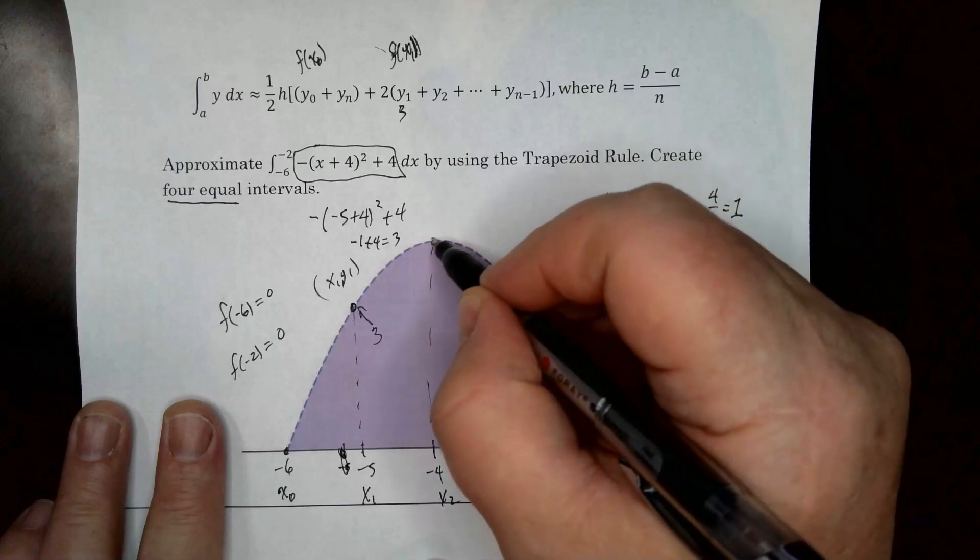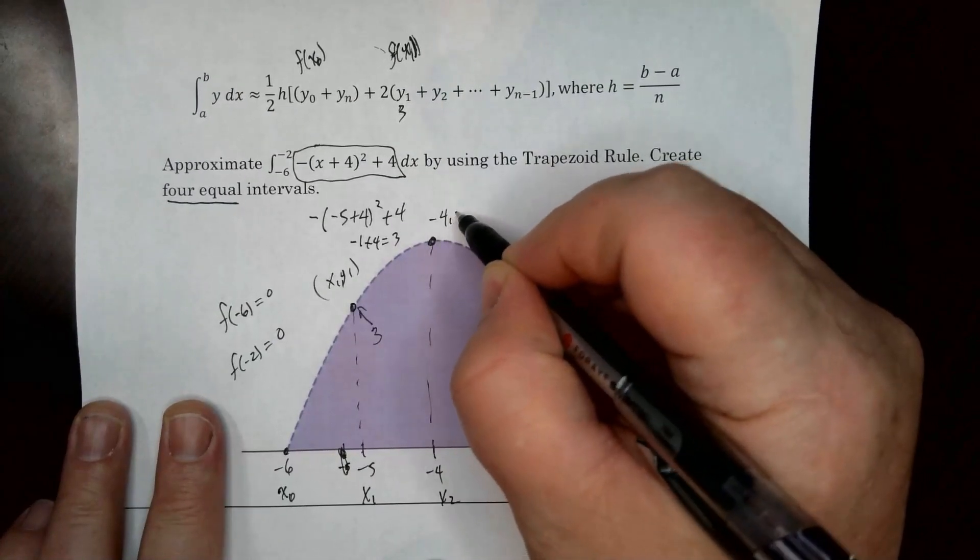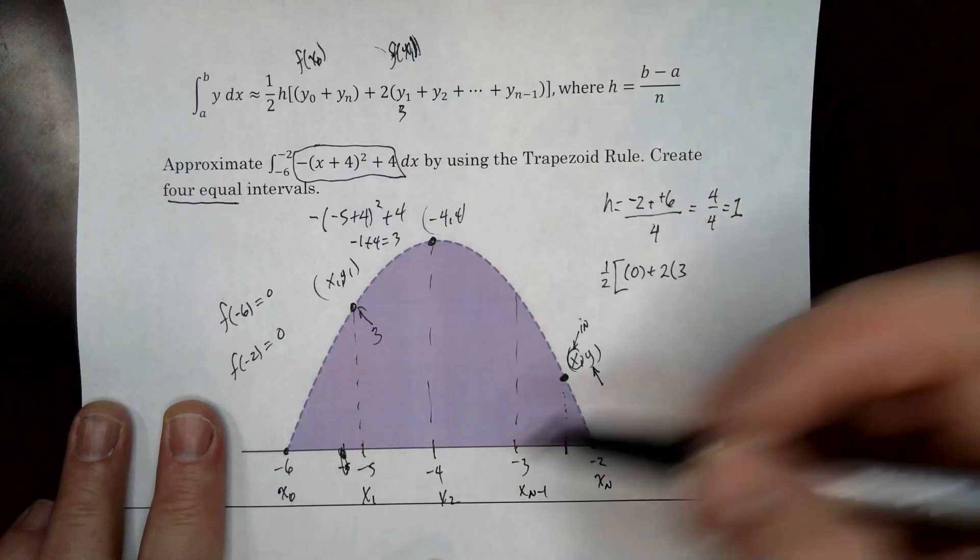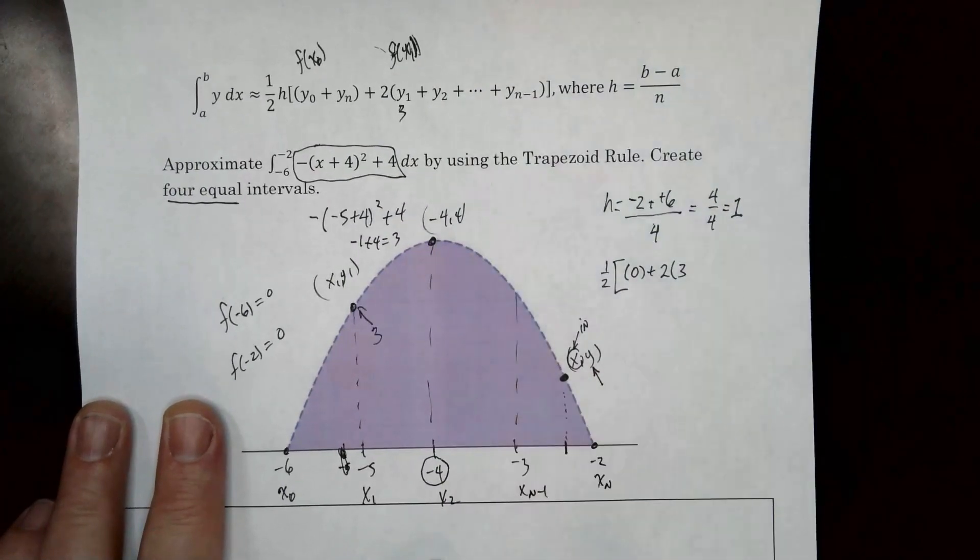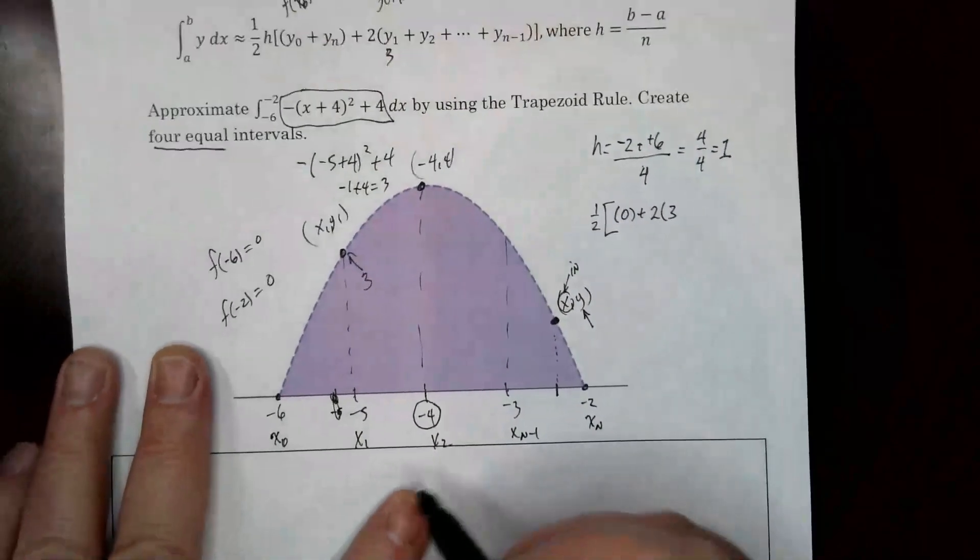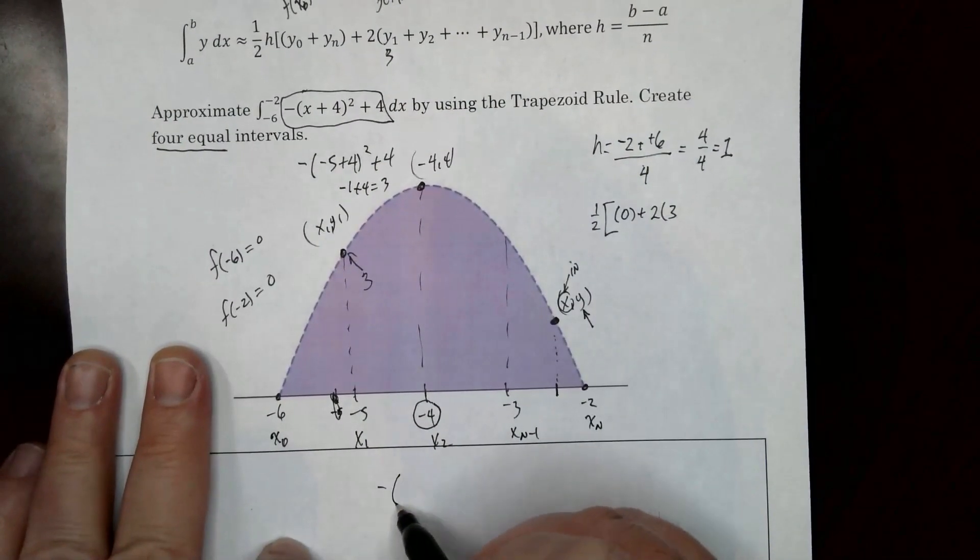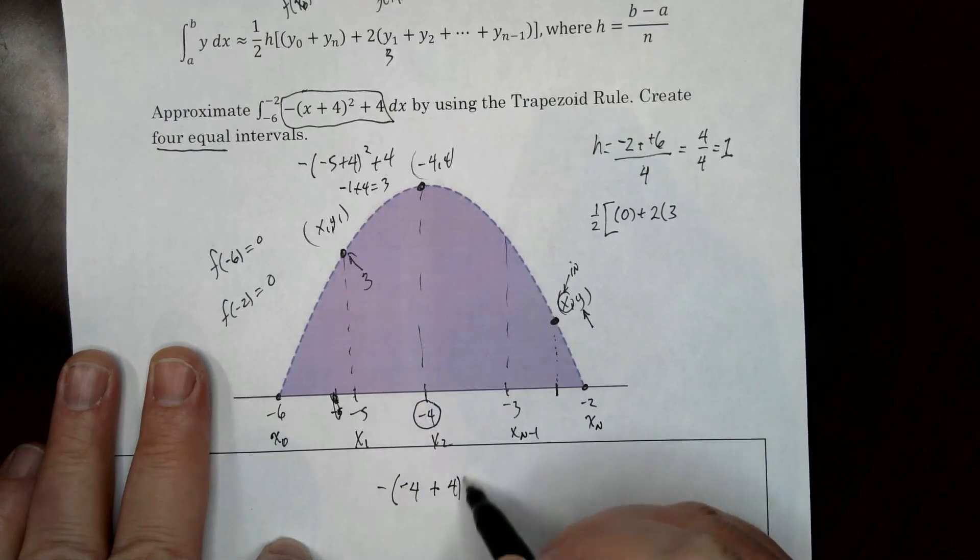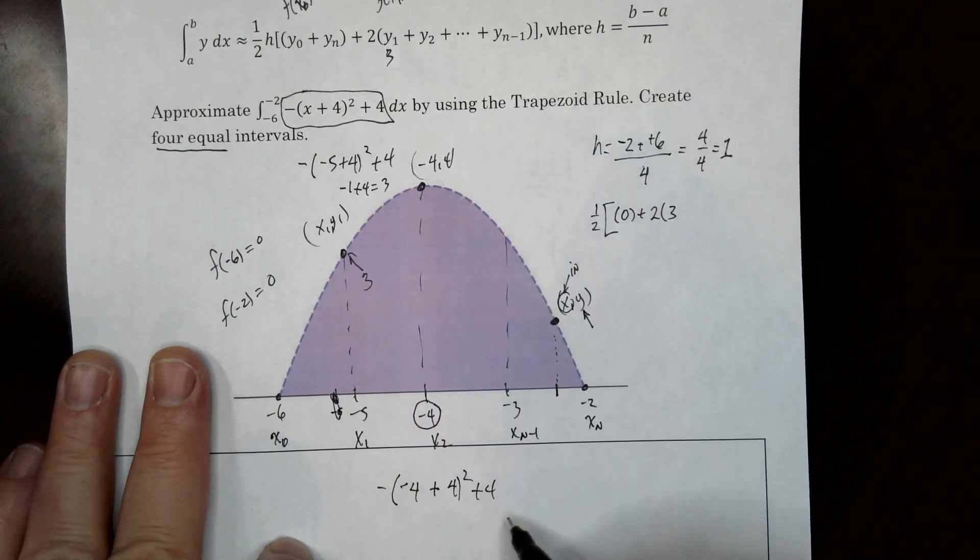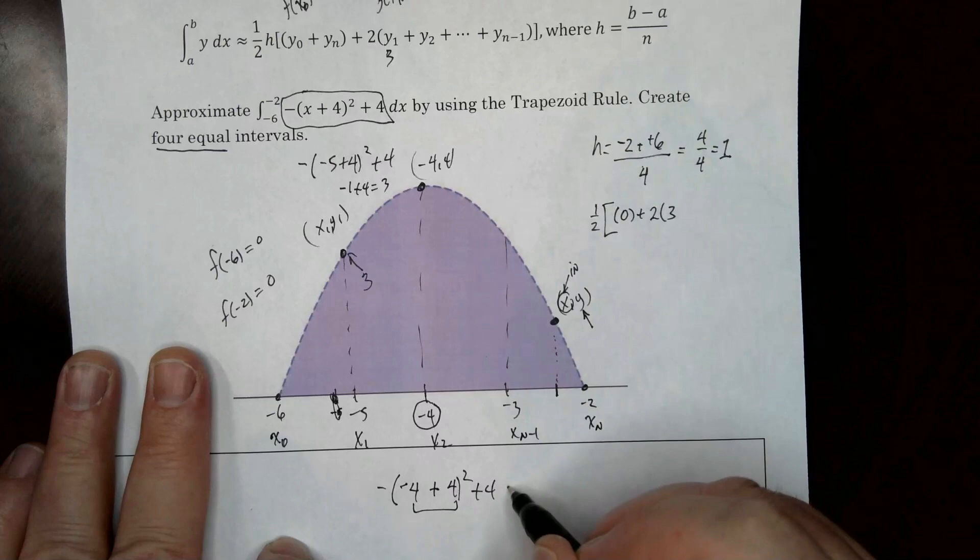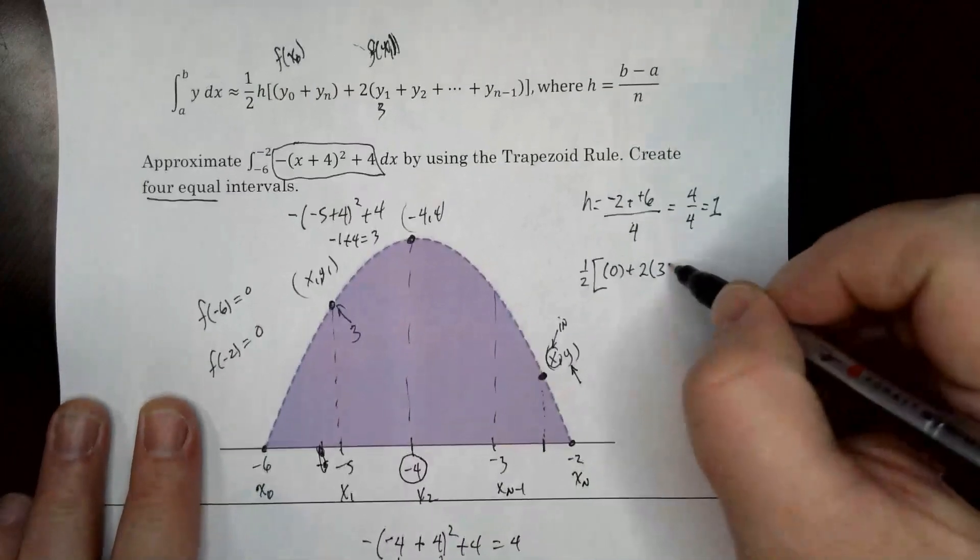y2. I already know that the coordinate right here is negative 4, 4. That's the vertex. Negative 4, 4. Now let's say you didn't know that. Same deal. Take that, plug it in. Plug it into this thing right here. We'll go ahead and scoot this paper a little bit. So here's our formula. So we're going to have negative 4 plus 4 squared plus 4. So that's zero. Zero squared is zero. Negative zero is just zero. It's equal to 4. So plus 4.